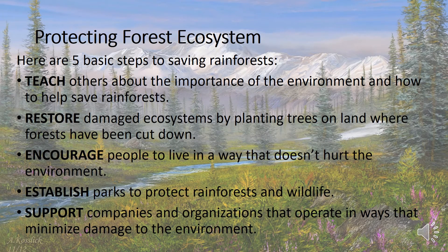How can we protect forest ecosystem? Here are five basic steps to saving rainforests. First is to teach others about the importance of the environment and how to help save rainforests. Second is to restore damaged ecosystems by planting trees on land where forests have been cut down. Next is to encourage people to live in a way that doesn't hurt the environment. Next is to establish parks to protect rainforests and wildlife. And the last step is to support companies and organizations that operate in ways that minimize damage to the environment.